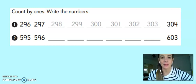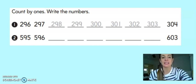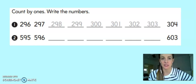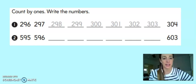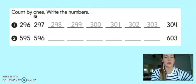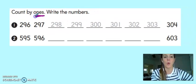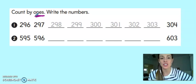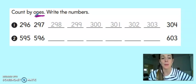As you can see here on my screen, we have a series of different numbers. The first section says count by ones, which means that each time I write a new number, I'm only going up by one. So I'm going to focus on the ones place.